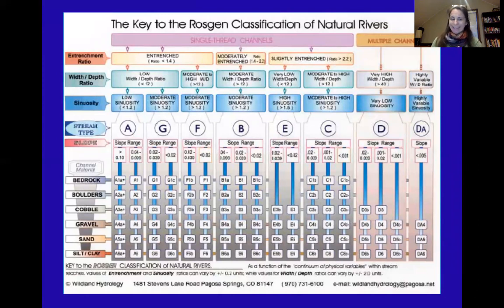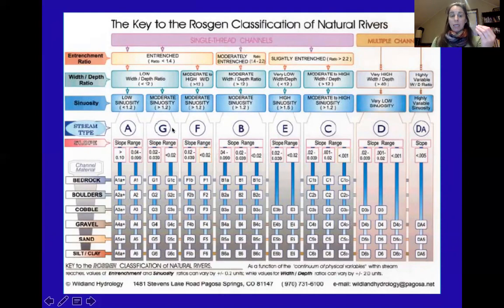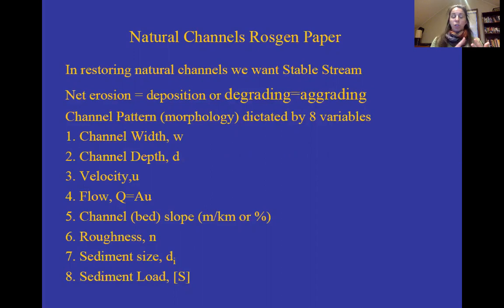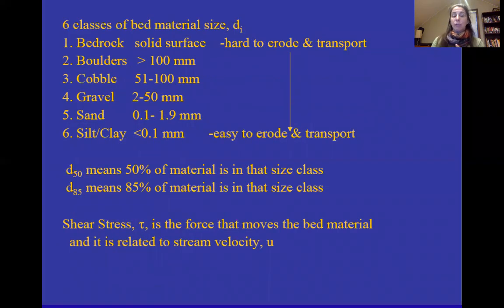The Rosgen classification looks at the entrenchment ratio, width-to-depth ratio, sinuosity, and assigns a stream type — A, G, F, B, C, D, E — based on whether it's sinuous and whether it has single or multiple channels. Then slope and bedding material are factored in. The system is based on eight variables: channel width, channel depth, velocity, discharge (Q), channel bed slope (meters per kilometer or percent slope), Manning's roughness factor, sediment size, and sediment load.